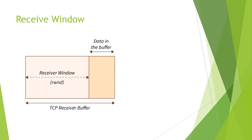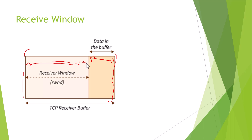In the entire receiver window, one portion is already filled with data that is still being processed — that space is not empty. What is empty is the available space starting from that point onward, and that is called the receiver window — the available space in the receiver's buffer. This is also called the window size, and the two terms refer to the same thing.